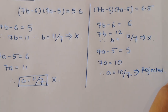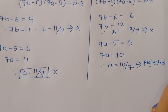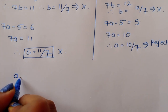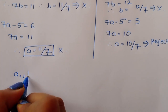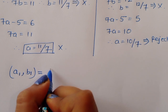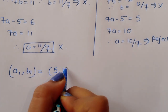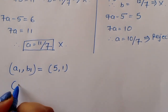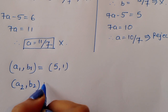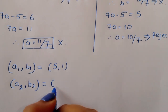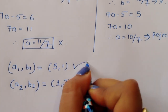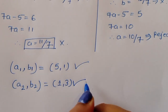We got two solutions. Solution 1: A1 = 5 and B1 = 1. Solution 2: A2 = 1 and B2 = 3. These are the two integer solutions for A and B.